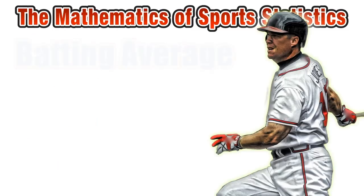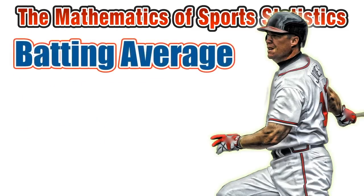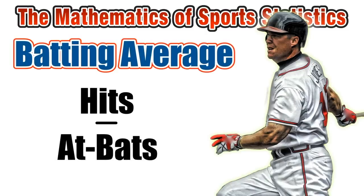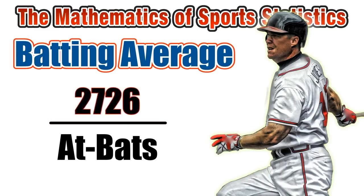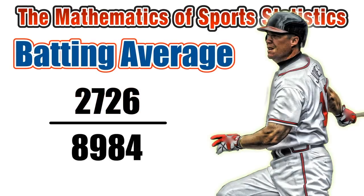Let's start off with finding batting average. To do this we use a formula: take the number of hits and divide that by the total number of at-bats. To calculate his career batting average, we take his total number of career hits — 2726 — and divide by his total number of career at-bats.